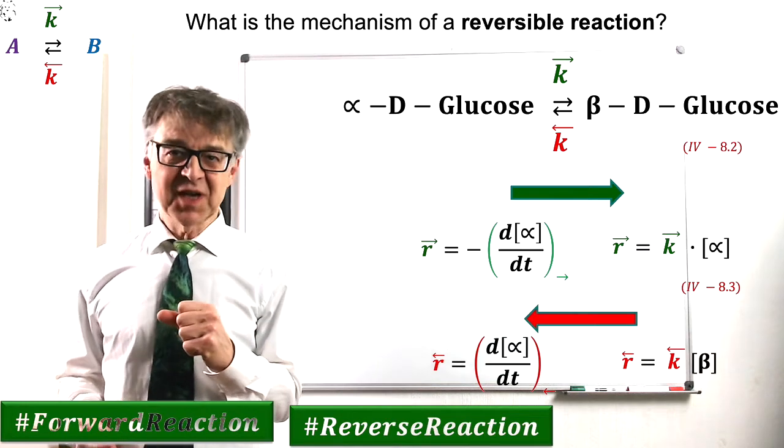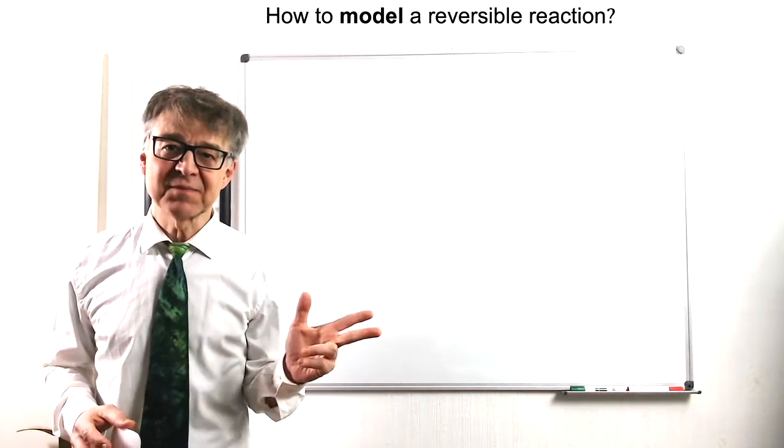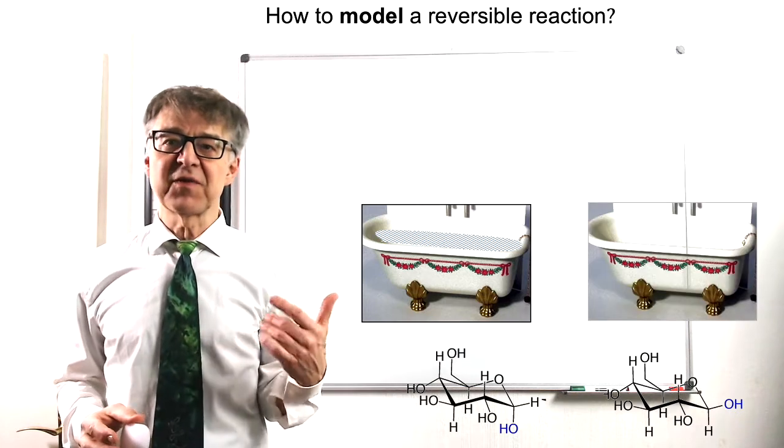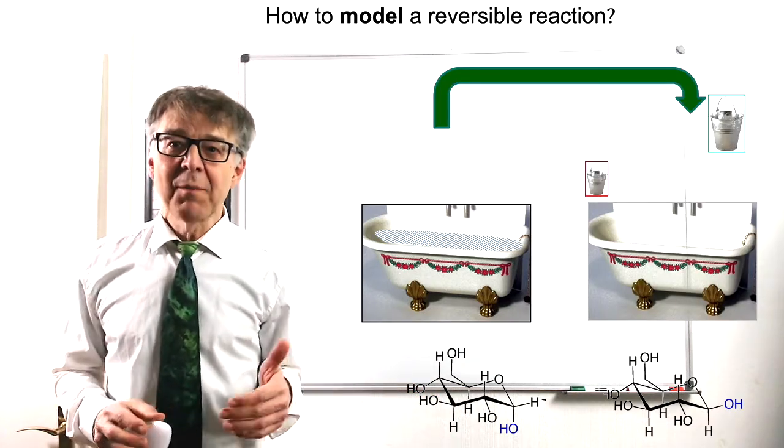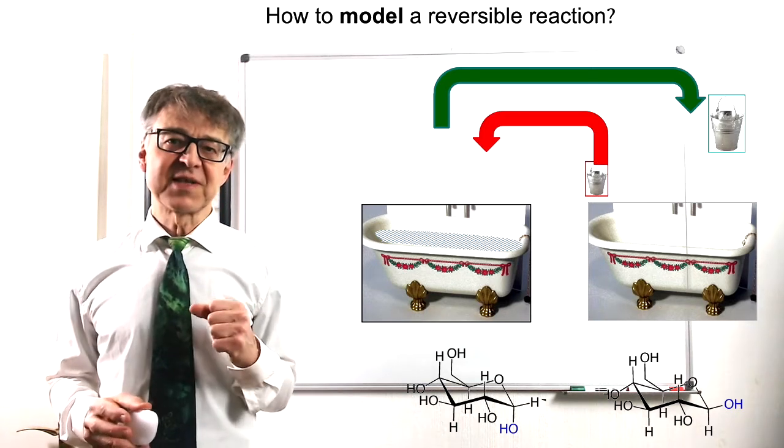In the water model, a reversible reaction looks like that. Water is not only transferred from the reactant tub to the product tub with vessel 1, but also in the reverse direction with a different vessel 2.